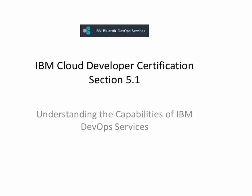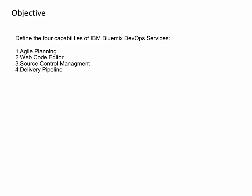Welcome to the IBM Cloud Developer Certification, Section 5.1: Understanding the Capabilities of IBM DevOps Services. In this section, we'll be looking at IBM Bluemix DevOps Services and the capabilities therein, to include Agile Planning, Web Code Editor, Source Control Management, and a Delivery Pipeline.